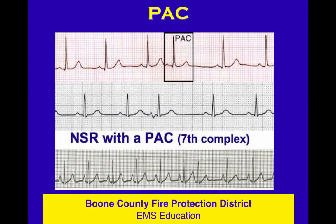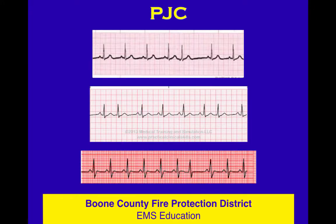Here's a PAC — premature atrial complex. On the bottom strip it comes in early with a different shape. The middle strip is very clear: the third out of five complexes is early and that P wave does not look like the others. Same thing in the top strip. There is a P wave, it's early, and it's not like the others — premature atrial complex.